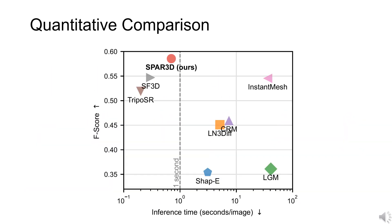In quantitative evaluation, SPAR3D outperforms other state-of-the-art methods for single-image 3D reconstruction, while achieving fast inference speed under 1 second per image.